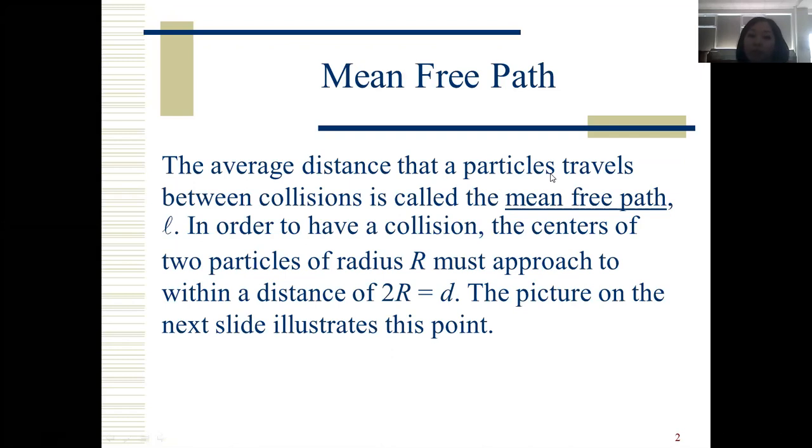What is mean free path? The average distance that a particle travels between collisions is called the mean free path, L. In order to have a collision, the centers of two particles of radius R must approach within a distance 2R equal d.